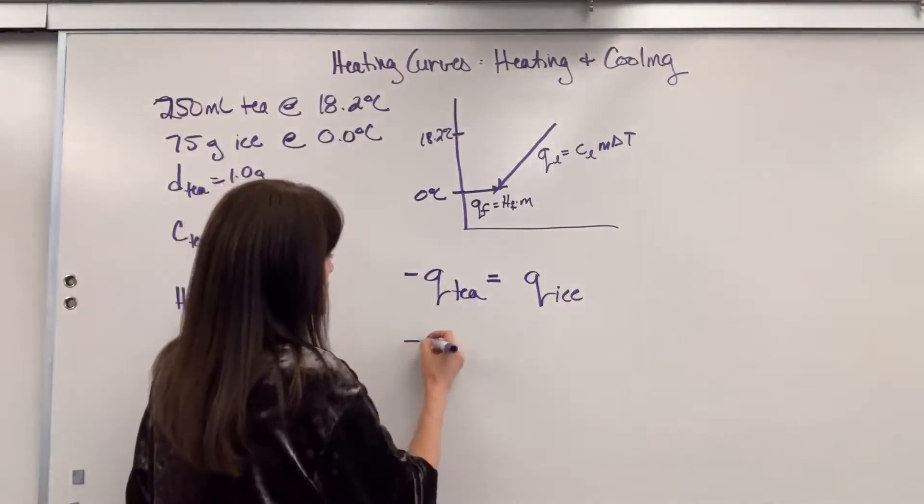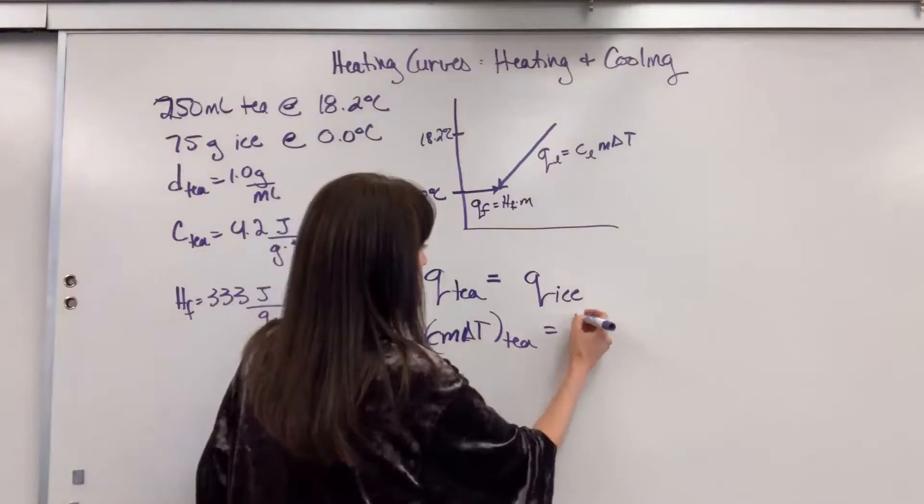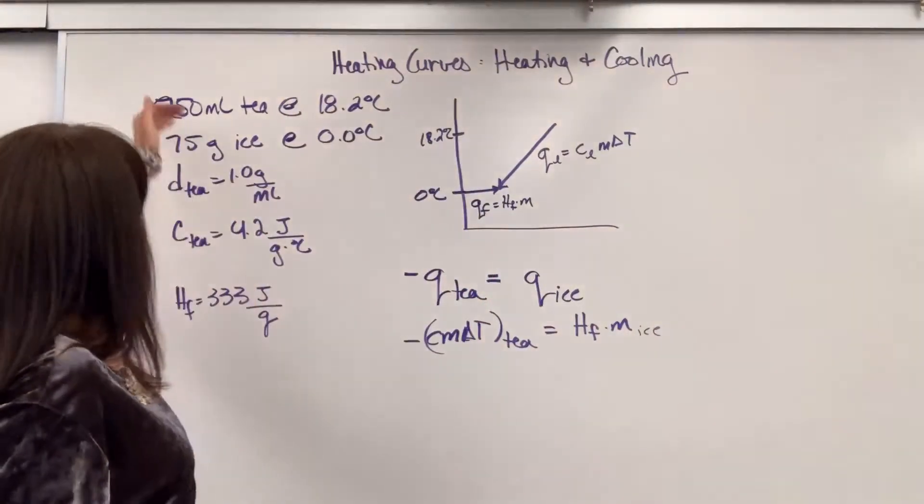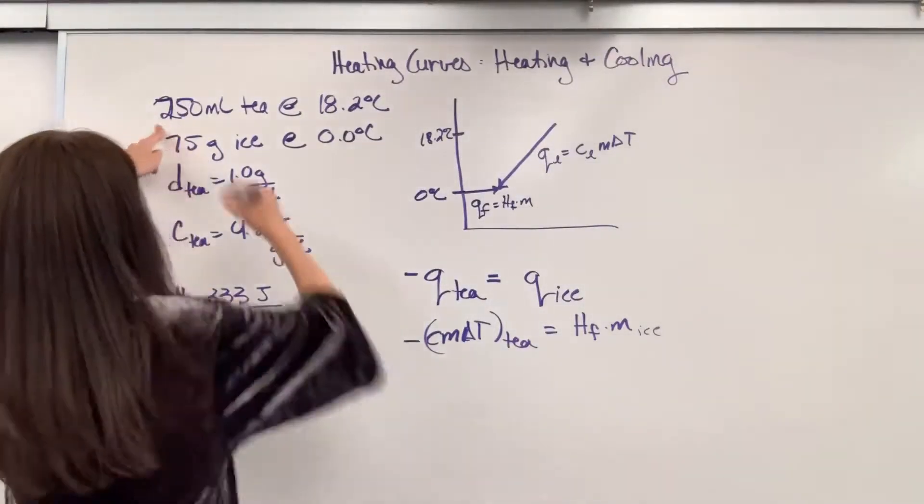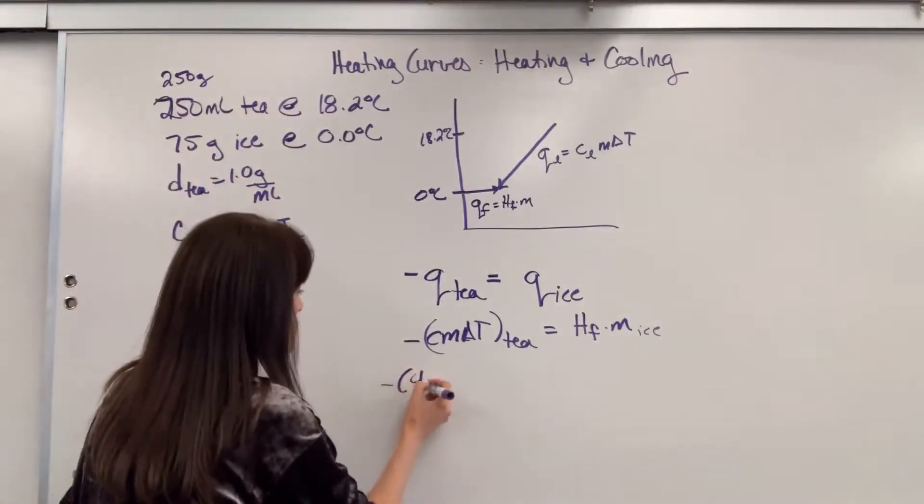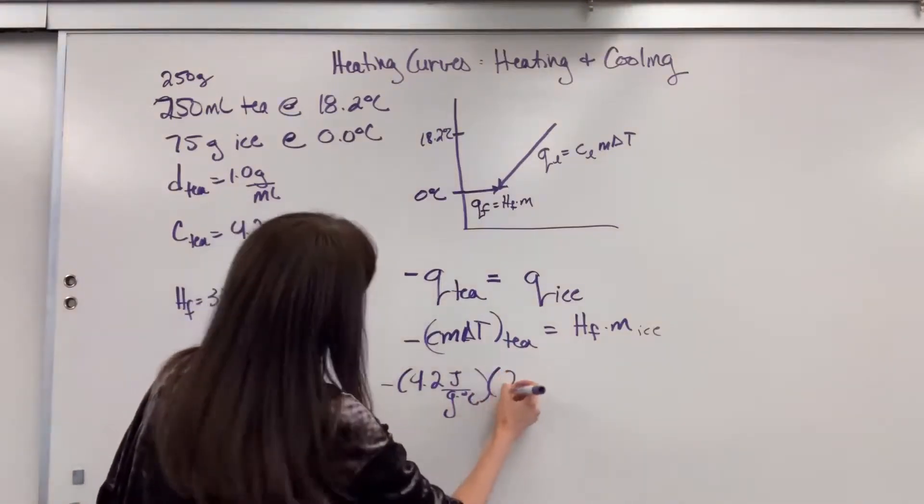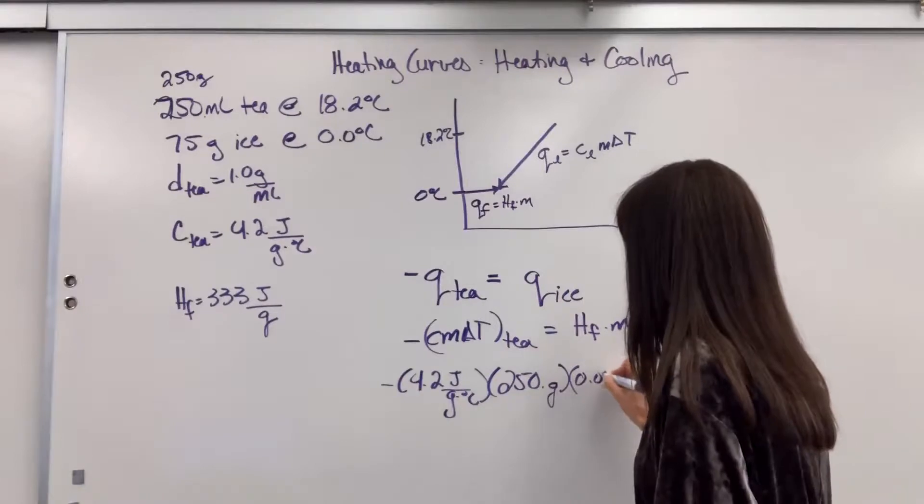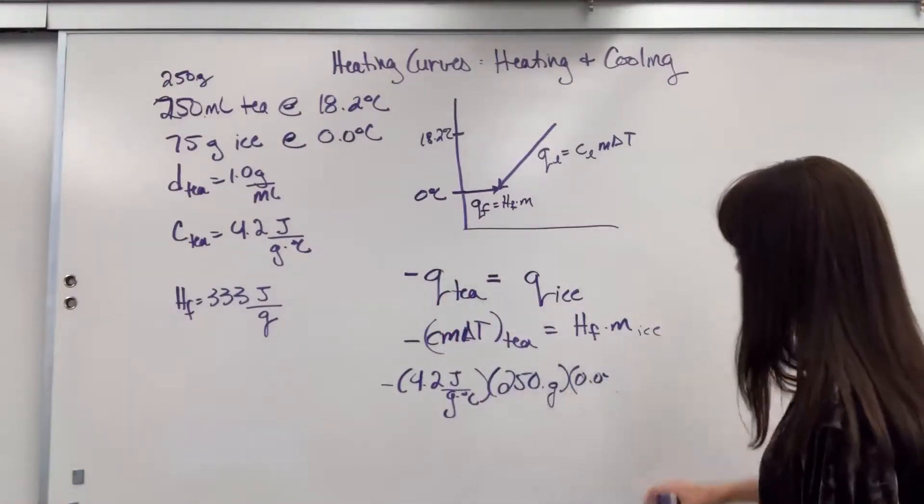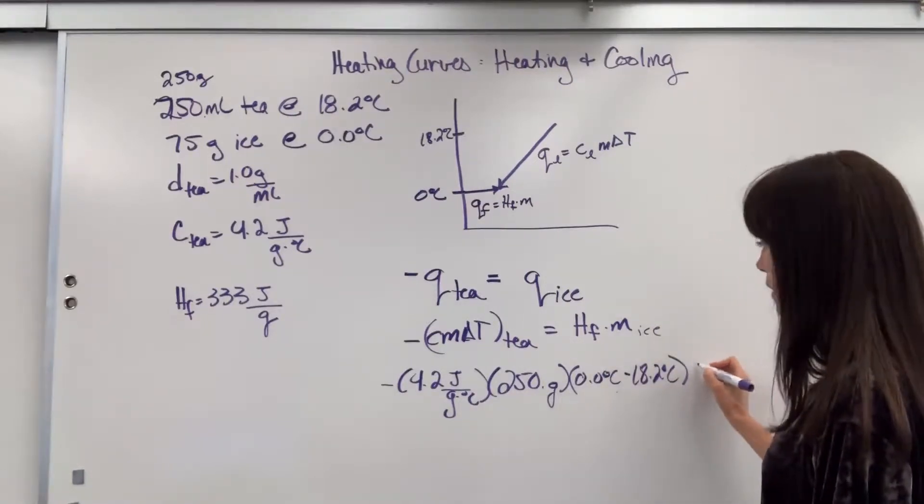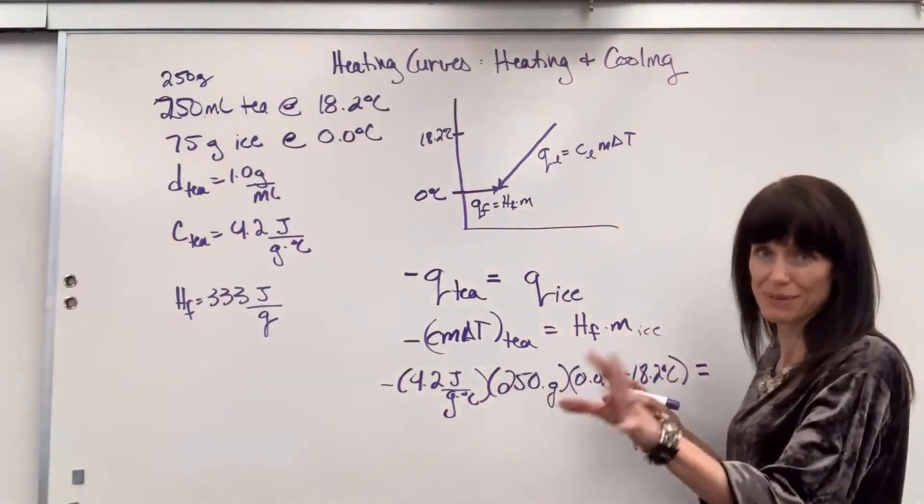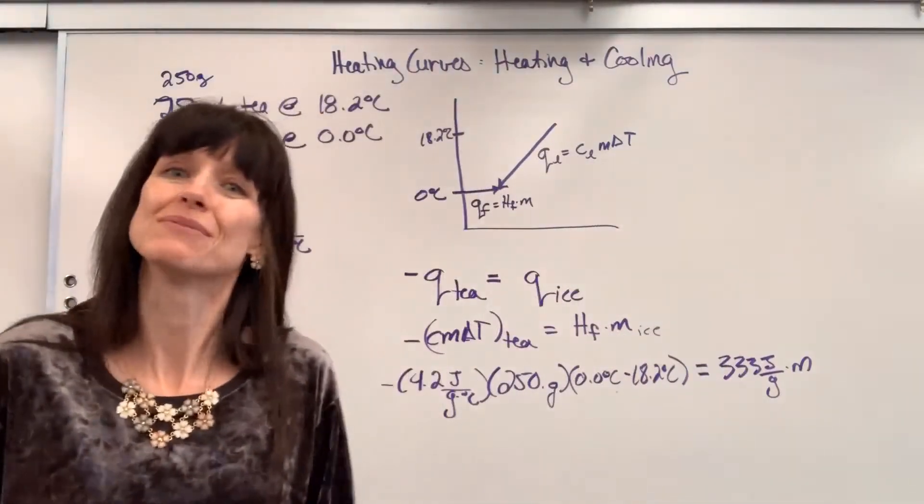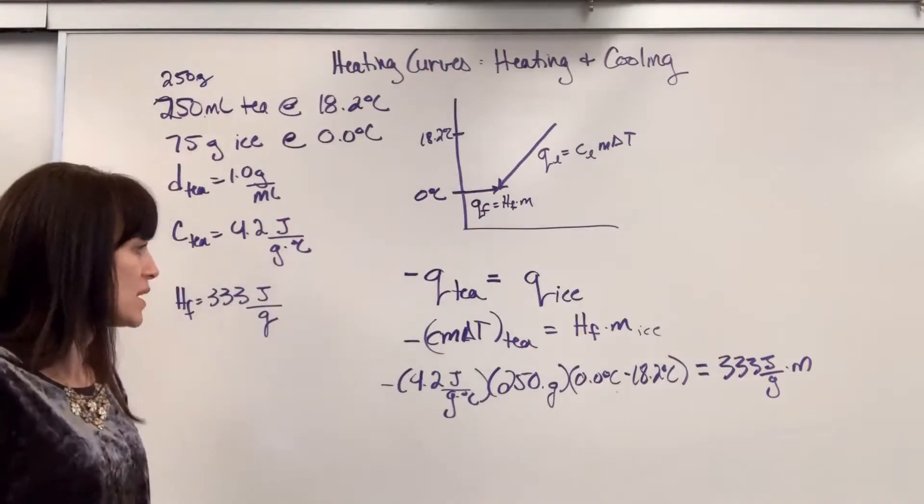So now we can just plug in those formulas. Negative CM delta T, that's the T equals heat of fusion times mass. And remember, this is going to be mass of the ice. So at this point, we can just plug in. So if my T has a density of one gram per mil, this would be 250 grams. We're going to have negative 4.2 joules per gram times degrees C, times 250 grams, times final temperature, 0 degrees C, minus the initial temperature, which was 18.2 degrees C. That's the T part. That's the energy that's going to be released, equals heat of fusion, 333 joules per gram times M. That's my unknown. I want to know how much of this ice is going to melt to cool down that T to zero degrees C.